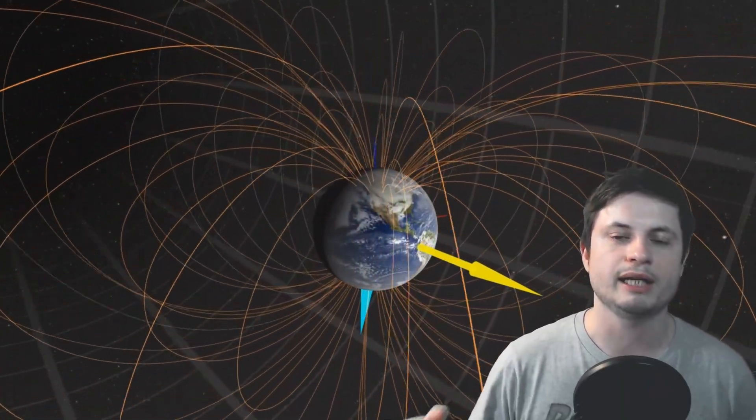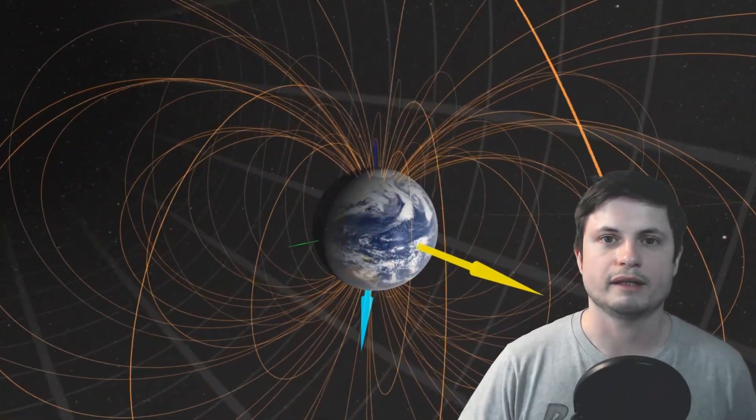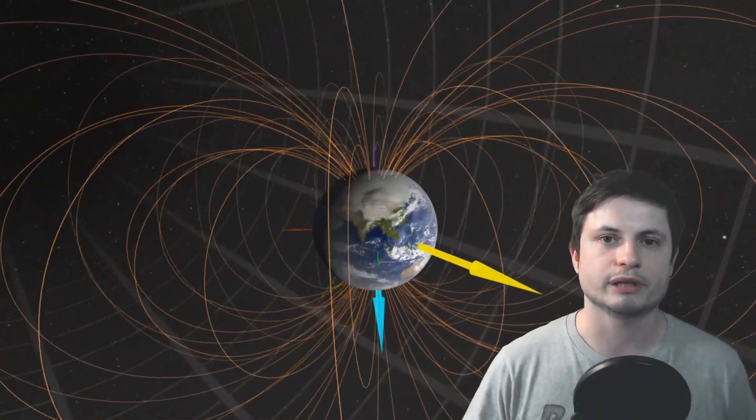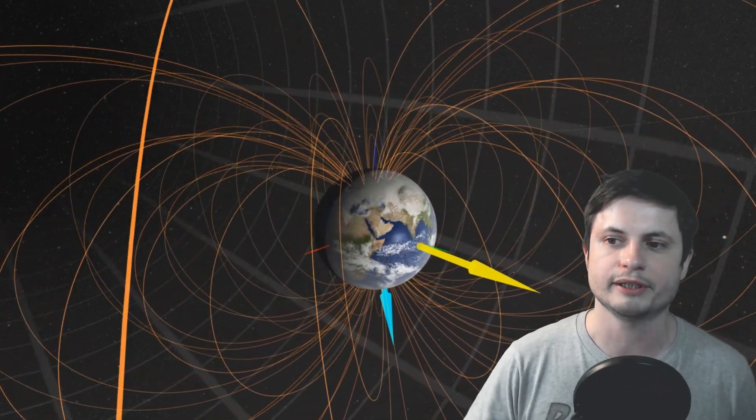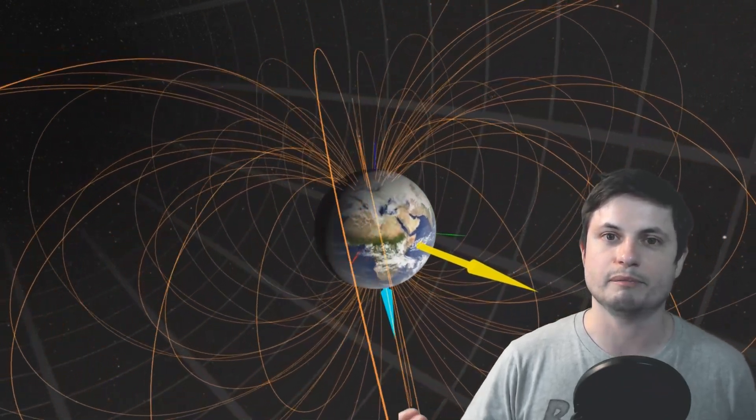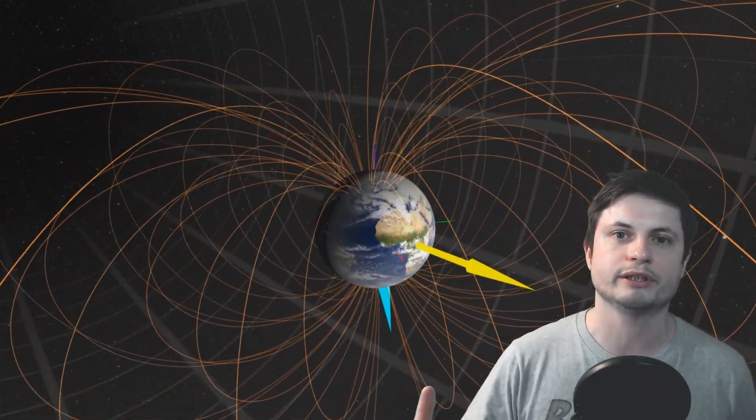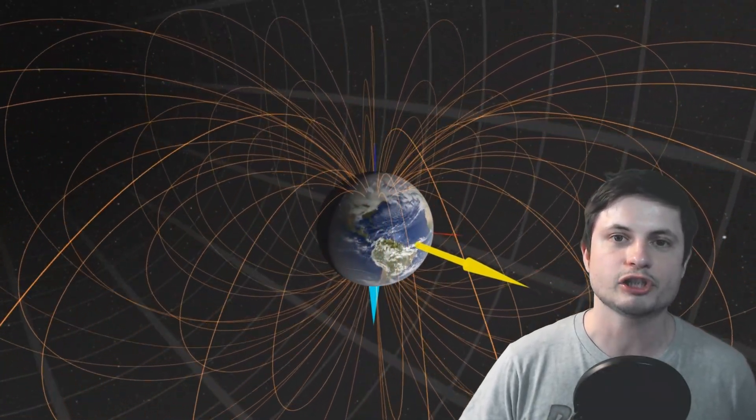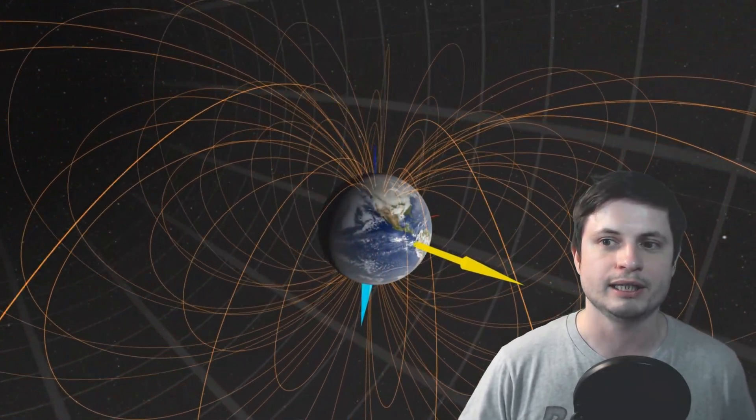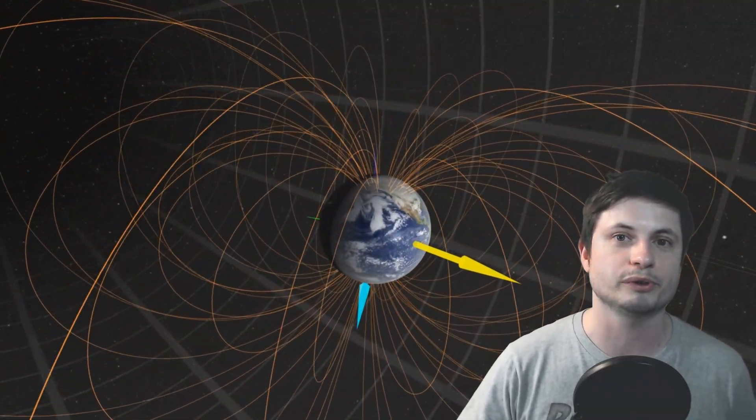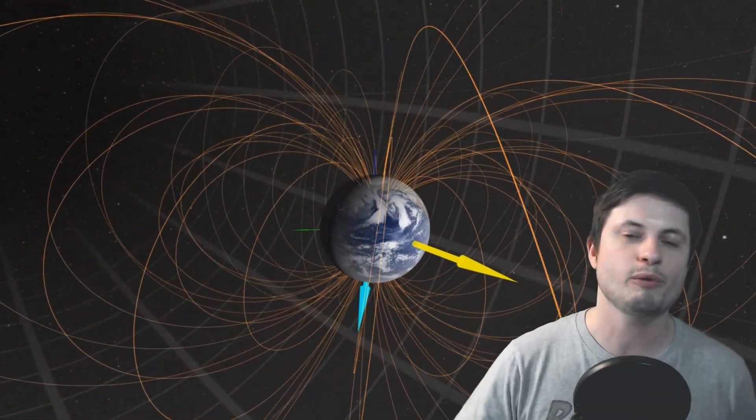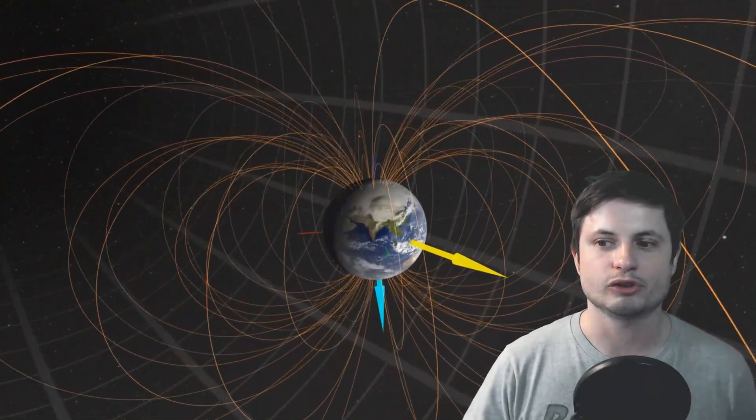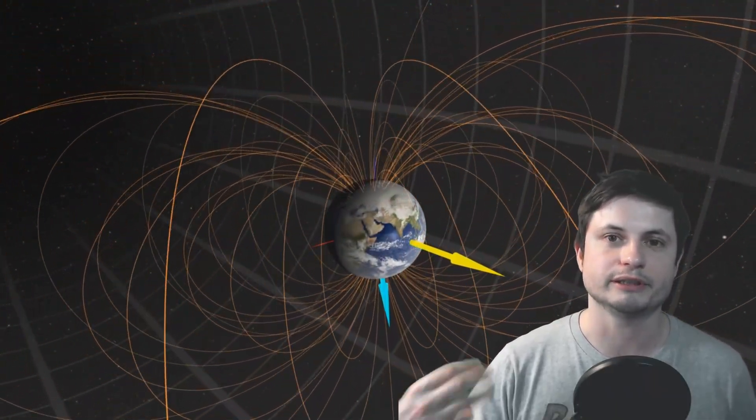In other words, north will become south, south will become north. One of the reasons why they started saying this is because we know that the magnetic field has actually flipped many times in the history of our planet, and it basically happens about every 200 to 300,000 years. But the last time it flipped was actually close to about 780,000 years ago. In other words, it's super delayed, way past its due and it should have happened a long time ago.